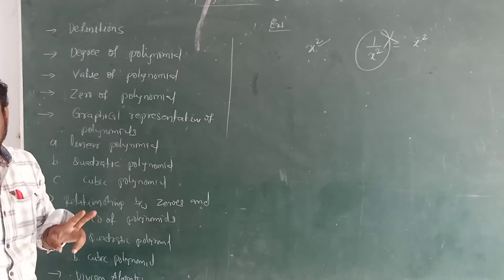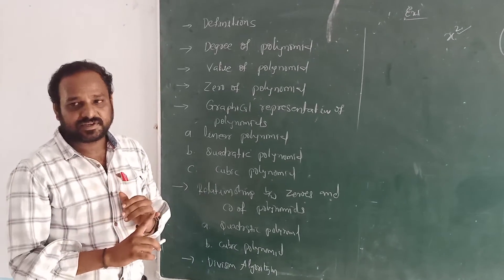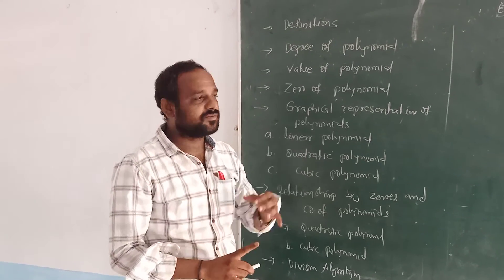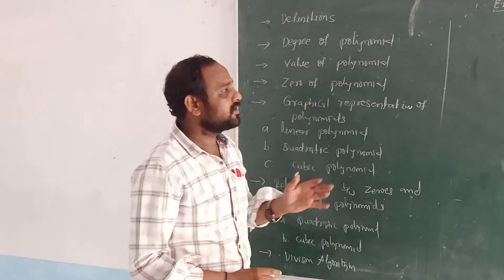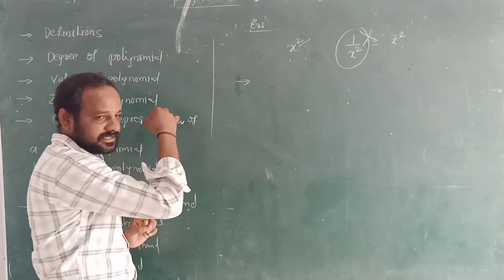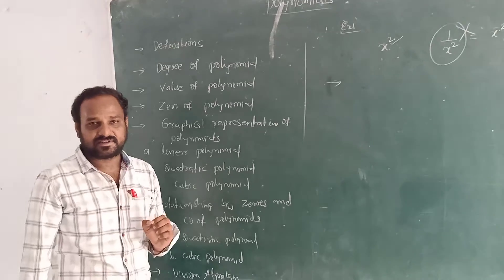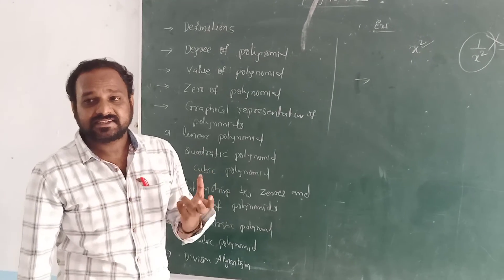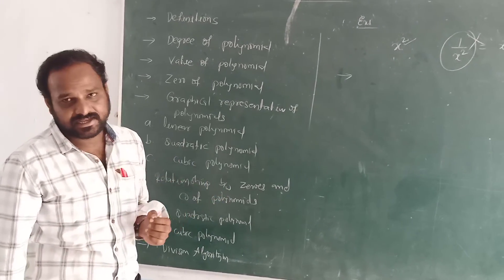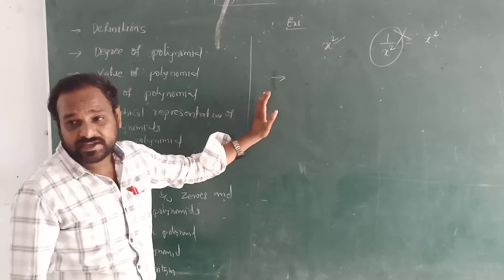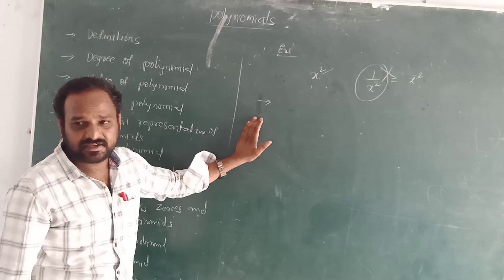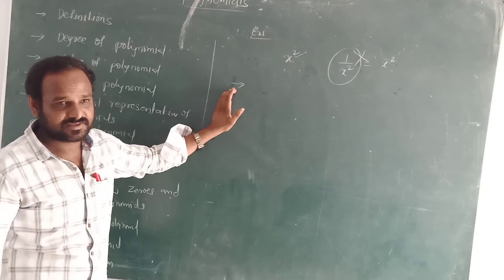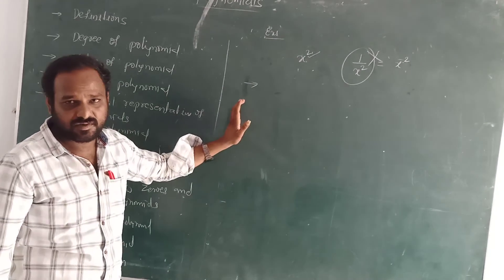Polynomials are of two types. First one is based on degrees, and second one is based on terms. Based on degrees, the types are: first, linear polynomial — a polynomial which has only degree one is called a linear polynomial. Second, quadratic polynomial — a polynomial which has degree 2 is called a quadratic polynomial.